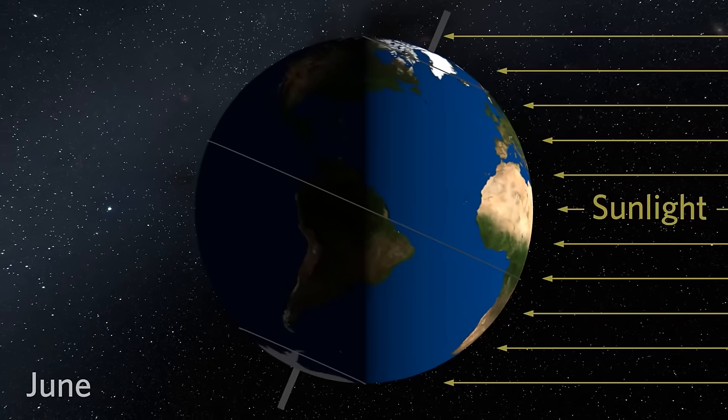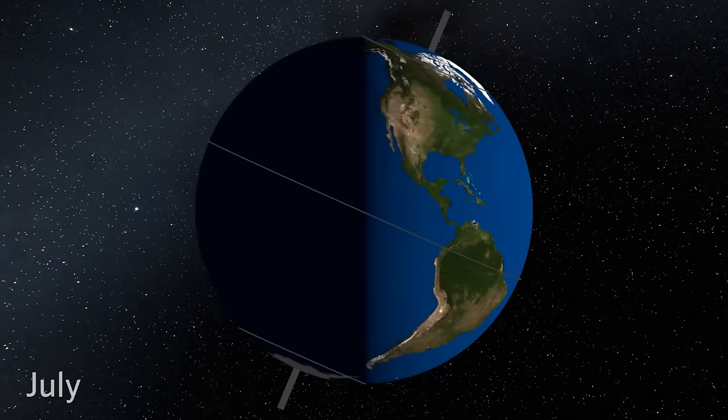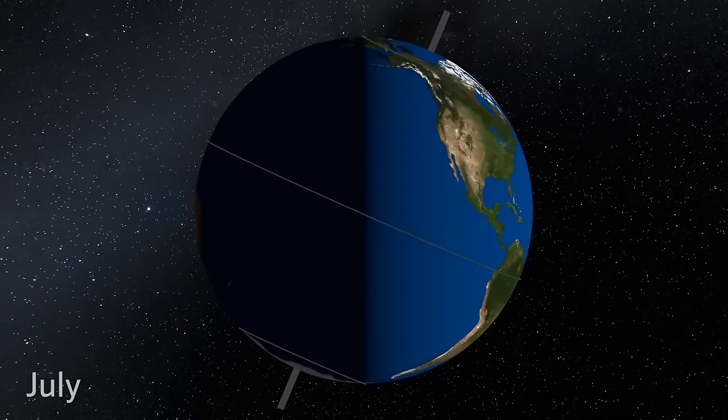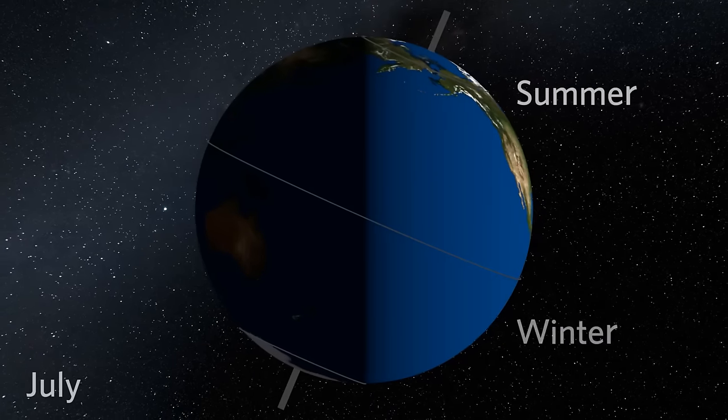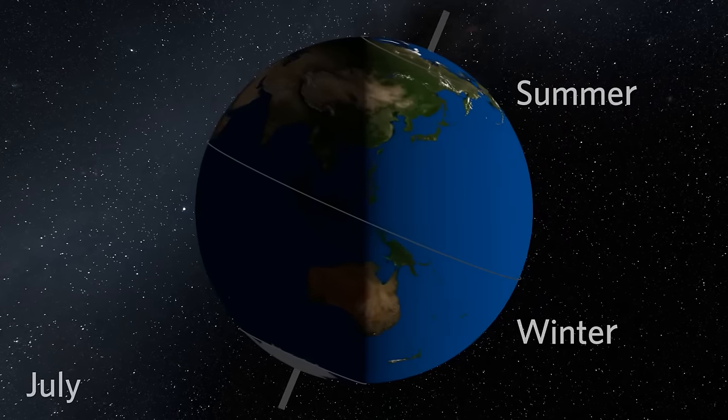Compared to winter, summer days are warmer, and the Sun stays in the sky much longer. Notice too that while it's summer in the Northern Hemisphere, it's winter in the Southern Hemisphere. Because of Earth's tilt, the seasons are reversed.